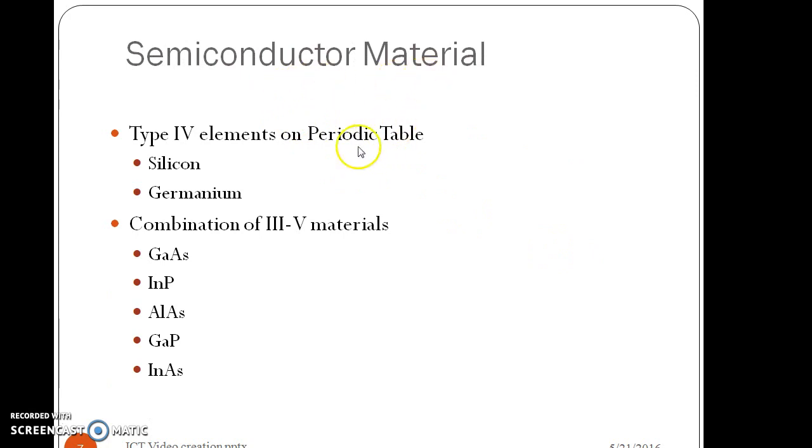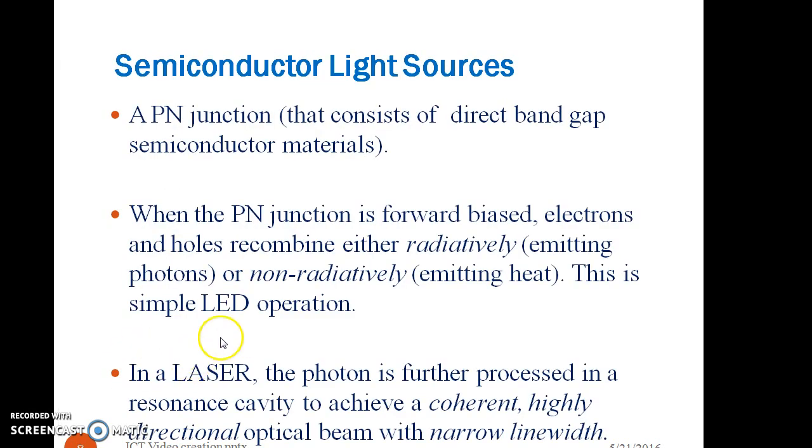The semiconductor materials used for optical sources are type 4 elements, silicon germanium and a combination of type 3 and 5 materials such as gallium arsenide, indium phosphide, aluminum arsenide, indium arsenide and gallium phosphide. The semiconductor light sources are like PN junction diode. These diodes are also called direct band gap semiconductor materials.